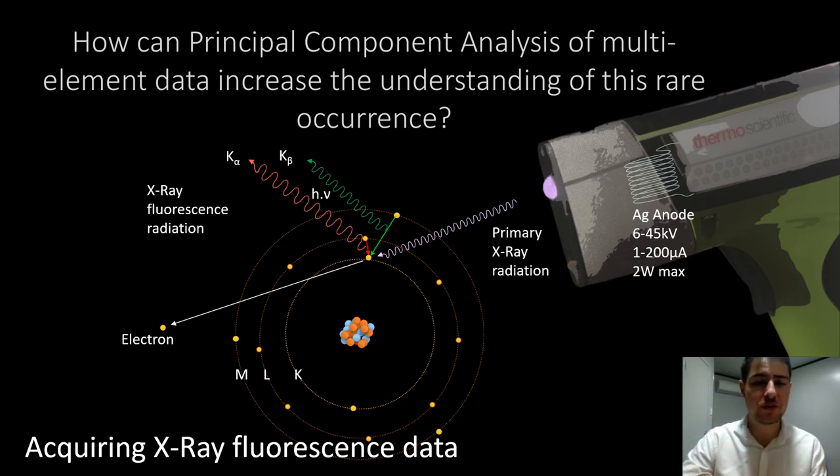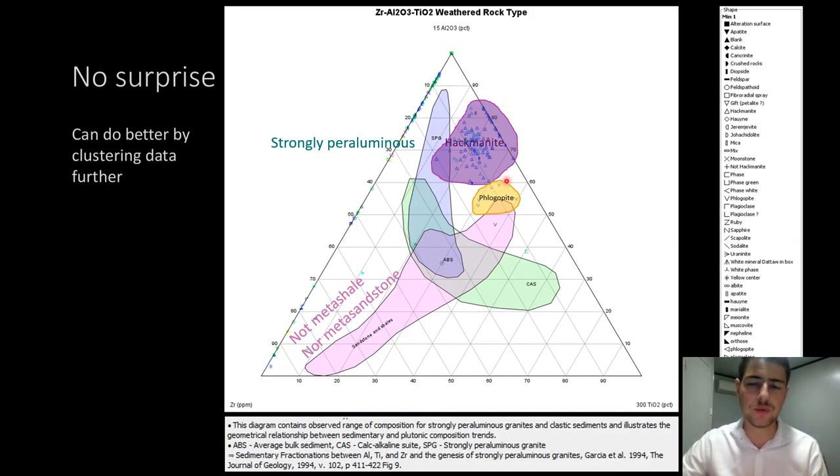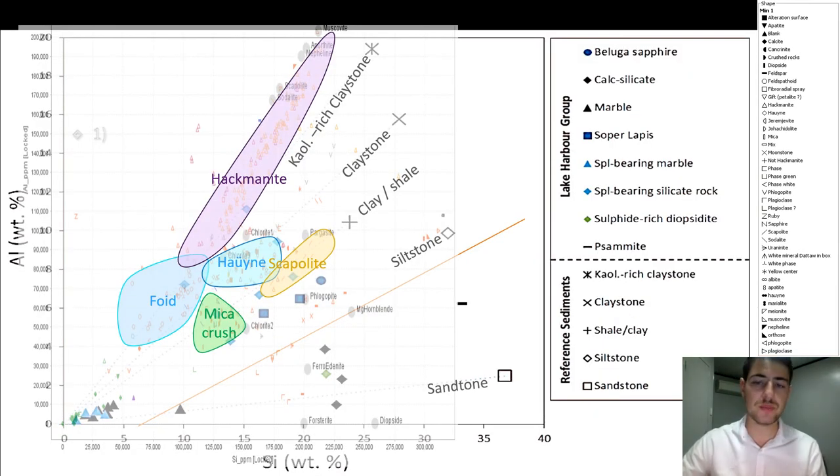I wanted to do a bit more geochemistry, and for that I acquired some data using X-ray fluorescence. The data is quite limited because you don't have all of those lightweight elements like sodium, which is a major issue because all the rocks are supersodic. If you plot that in the right diagram, you see that the rocks are strongly peraluminous, and they are not coming from metashales or metasandstone, they are not silicic enough.